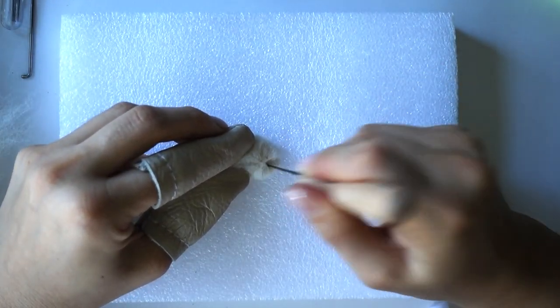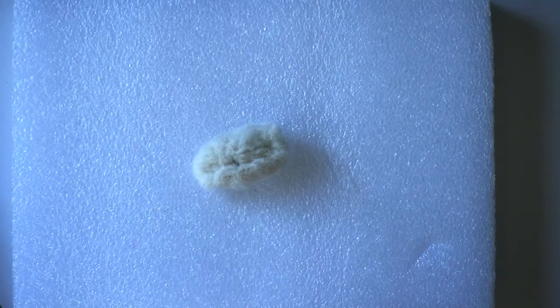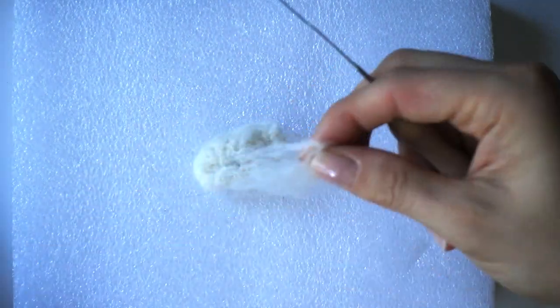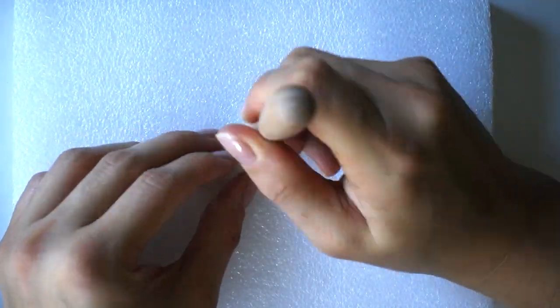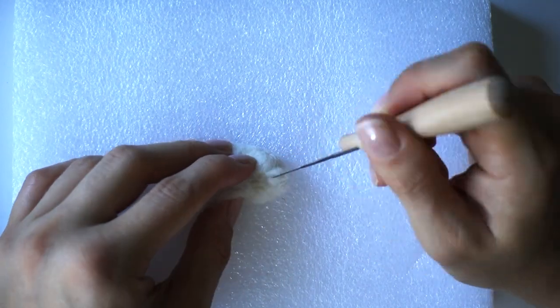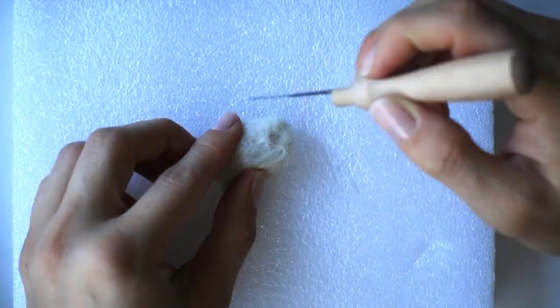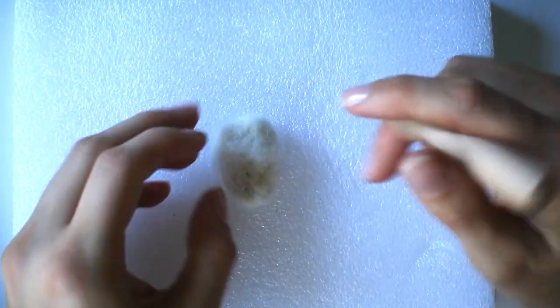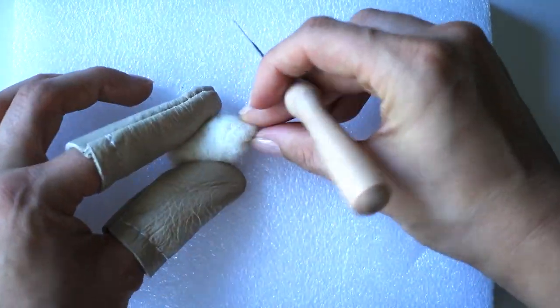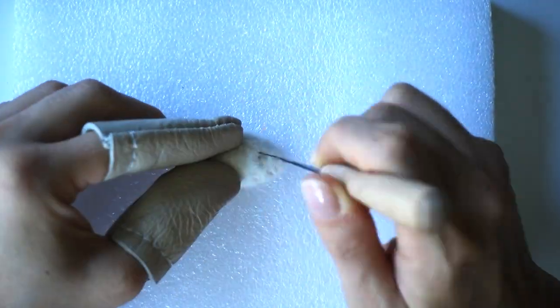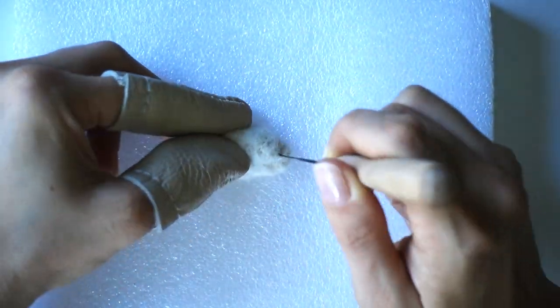If you stab it too much in one spot, like I did here, you can take some more wool and cover it up. I want my mouse to have a pointy nose, so I will continue to stab the edge while rotating the head.